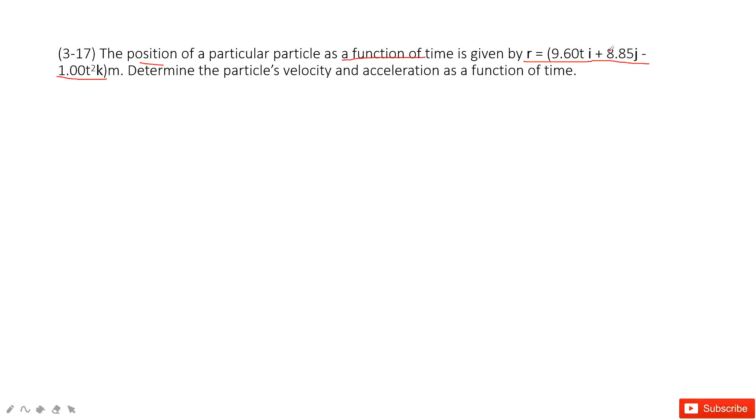In the j component, it is a constant. And in the k component, it changes with t, t squared. And it asks us to find the velocity and acceleration as a function of time.